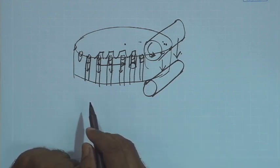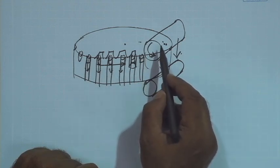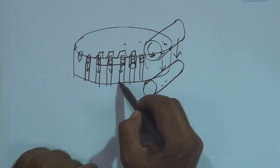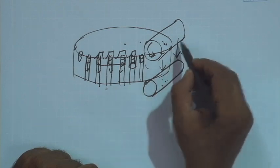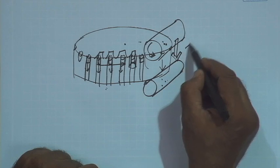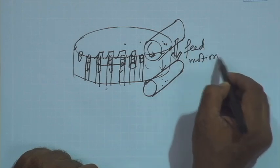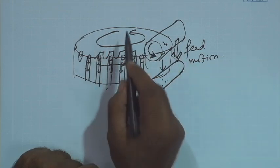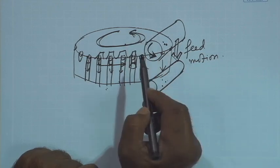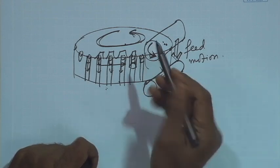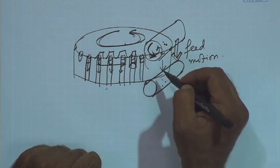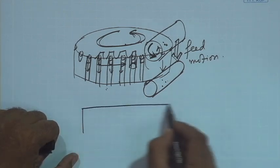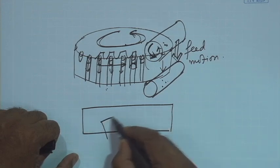The teeth are formed as the hob moves from the top to the bottom. If you move too fast, these teeth are going to be rough; if you move too slow, it will take a lot of time but the surface will be quite smooth. This downward movement defines the feed motion. The circular motion of the work piece defines the indexing motion — with respect to the hob speed, it defines how many teeth you are going to cut. The hob rotation defines the cutting speed.